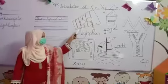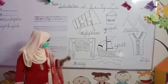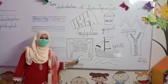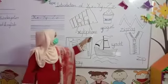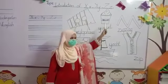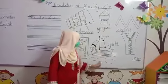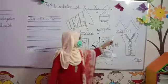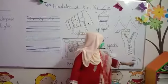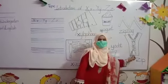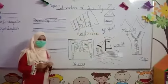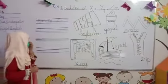X — xylophone, x-ray. Y — yogurt. Y. Z — zigzag, Z. Zip. Now come to the written part.